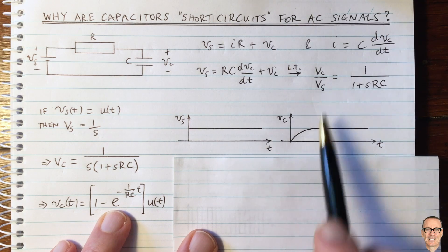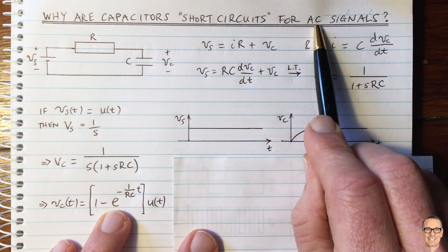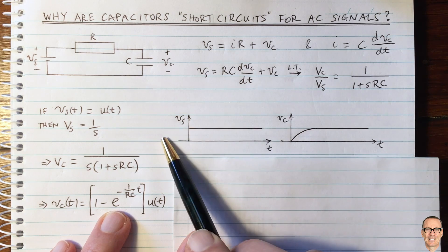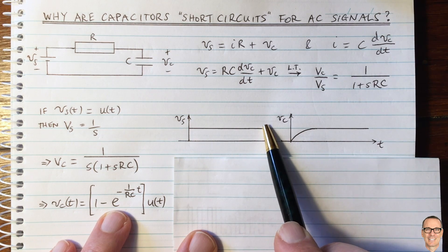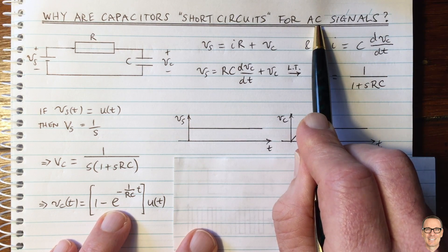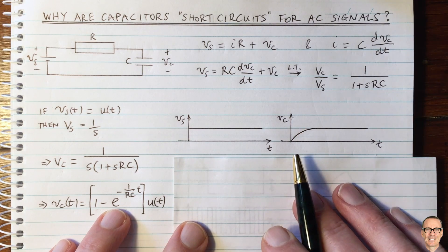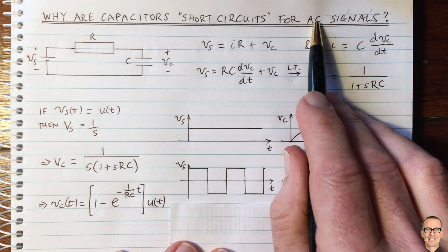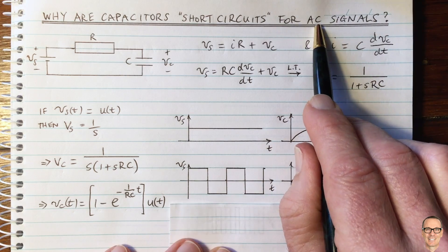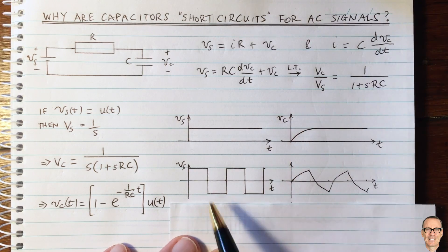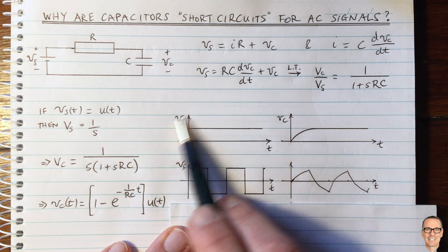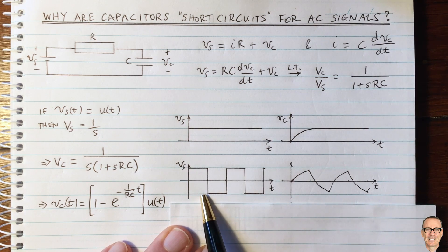So now let's use this to think about AC signals. Let's think about a voltage input, which is not just a step function, which goes up and stays constant. Let's start thinking about signals that are alternating. Let's think of a very basic one, not the sinusoidal one that we think of with AC signals for sinusoidal inputs, but let's think about this square function.